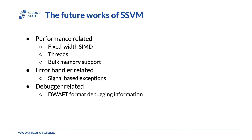Here are some future works on our long-term roadmap. For improving performance, we are going to provide fixed-width SIMD instructions, multi-thread support, and bulk memory support. To reduce memory checking overhead, we are replacing the boundary check in every memory access instruction with signal-based exceptions. Also, SSVM needs to provide DWARF format debugging information for tracing root causes when an error occurs after converting WebAssembly modules into native binaries.